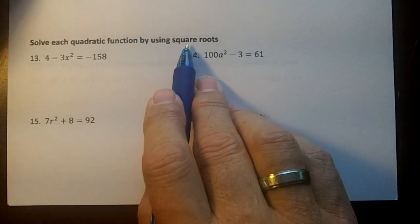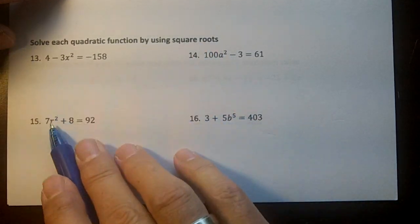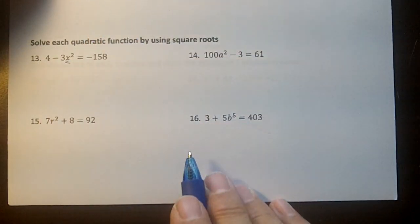Okay, solve each quadratic function by using square roots. On all of these numbers, we don't have a bx term, do we? So we're going to isolate the x squared and then take a square root.